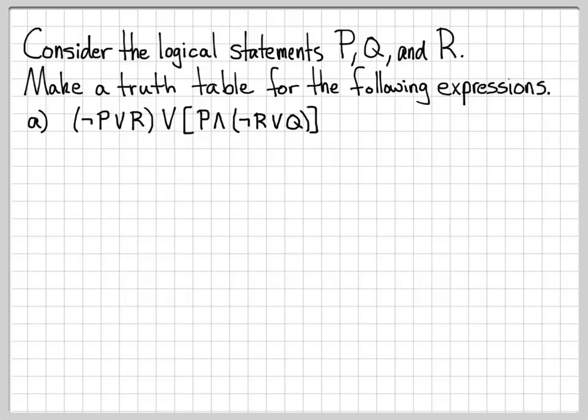This is quite a complicated expression, but we're going to follow the same process as before. We're going to make a truth table consisting of all combinations of our variables, and then systematically add columns for each part of this expression until we get a final column that is our complete overall logical expression.